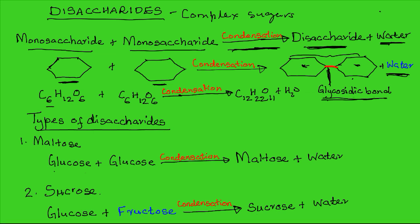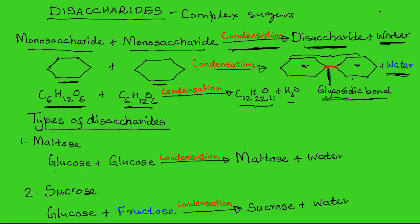Chemically, this is the formula of one monosaccharide — specifically we're using the hexose. This is a hexose sugar plus another hexose sugar to produce one disaccharide with the loss of a water molecule.